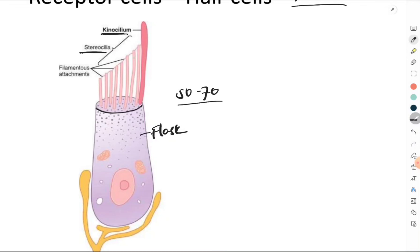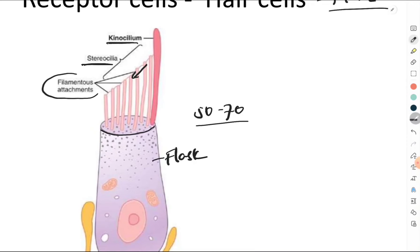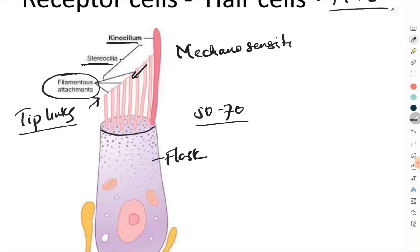The height of the stereocilia progressively decreases from the kinocilium end to the other end. The tips of the stereocilia are connected by filamentous attachments called tip links. These tip links connect to a mechanosensitive ion channel present at the top of the stereocilia, with the tip links running from the tip of one stereocilium to the next.